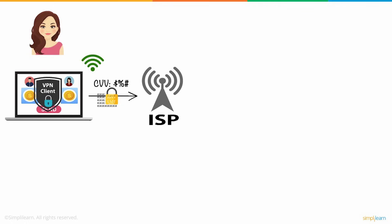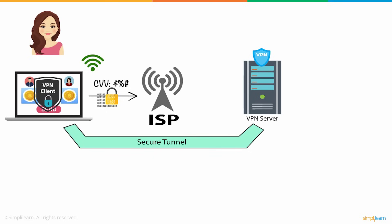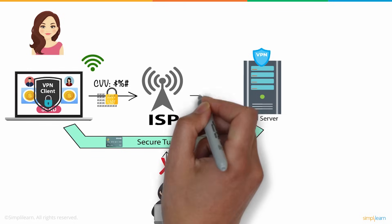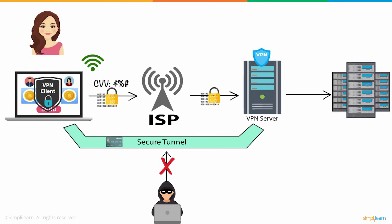Data is encrypted to make sure it is secure. Next, the VPN client establishes a VPN tunnel within the public network that connects to the VPN server. The VPN tunnel protects Jude's information from being intercepted by the hacker. Jude's IP address and actual location are changed at the VPN server to enable a private and secure connection.